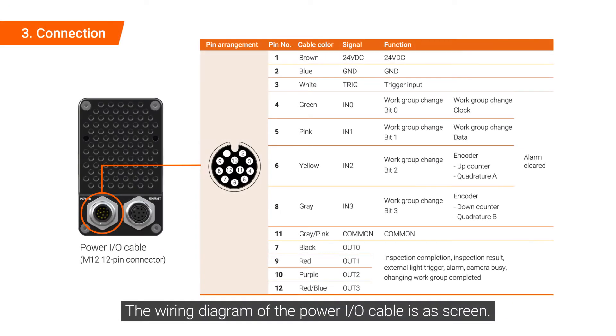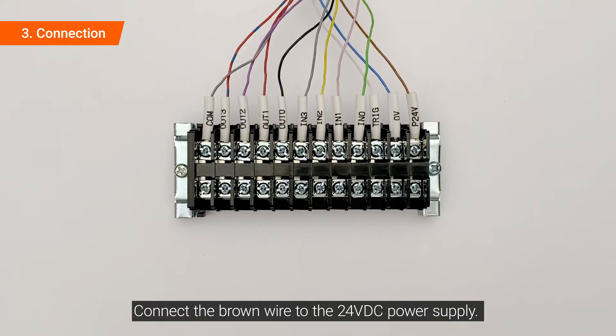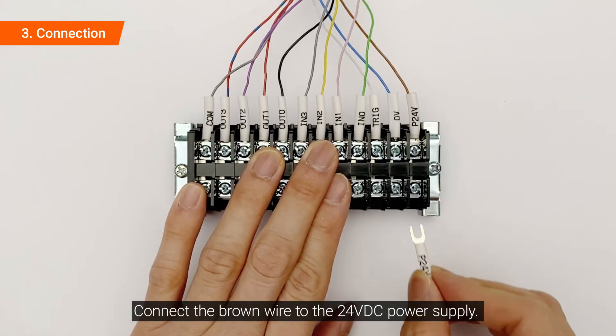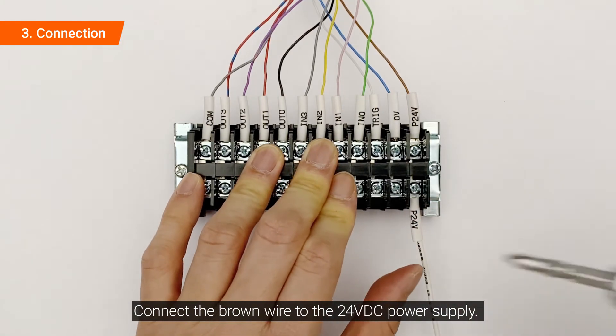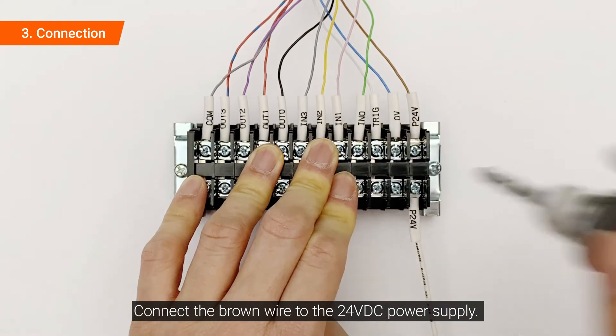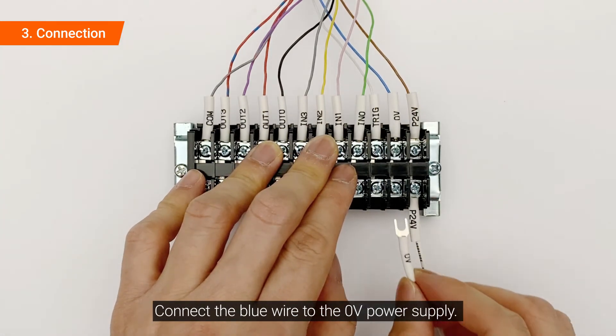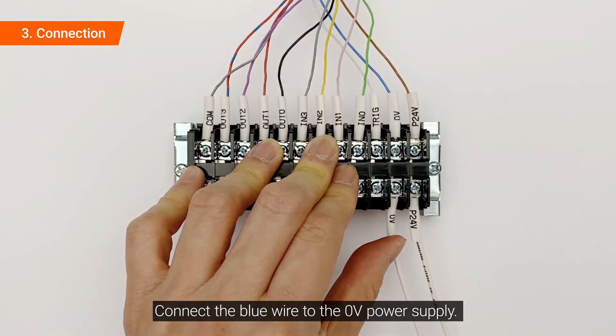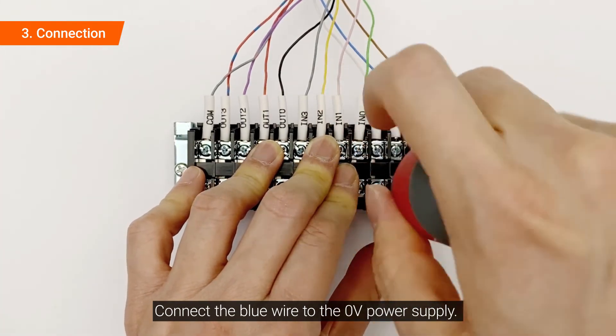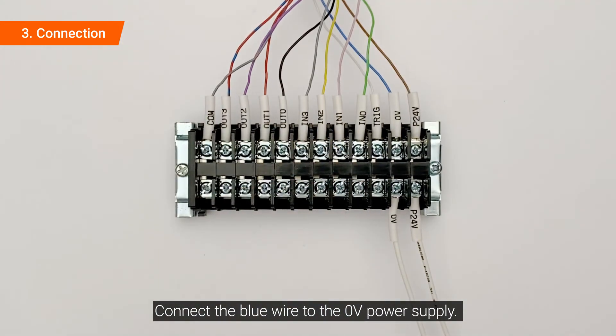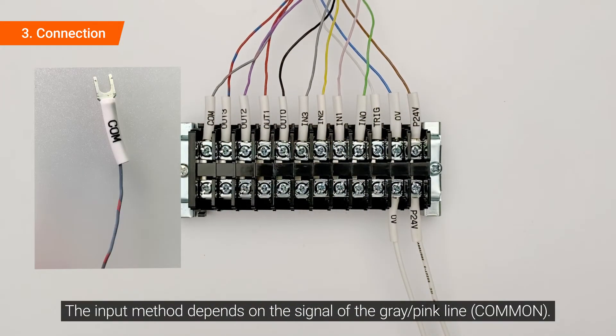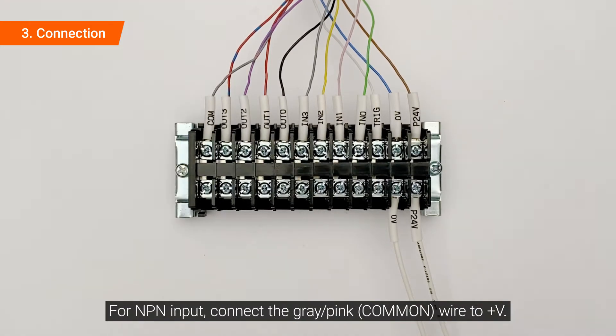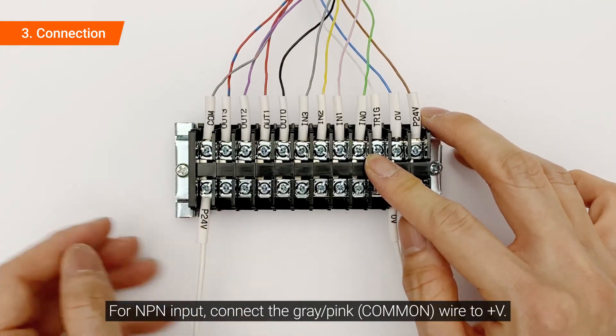The wiring diagram of the PowerIO cable is as shown on screen. Connect the brown wire to the VG sensor and to the 24V DC power supply. Connect the blue wire to the 0V power supply. The input method depends on the signal of the gray-pink line. For MPN input, connect the gray-pink wire to plus V.